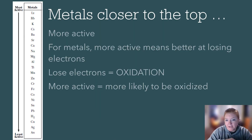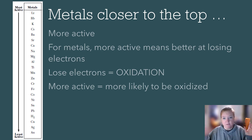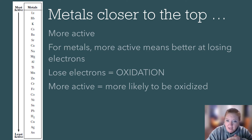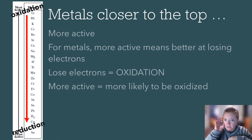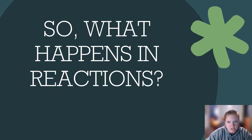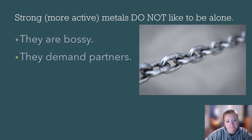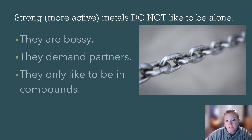Metals closer to the top are more active — there's an arrow that says 'most active' so you don't have to memorize it. For metals, being more active means being better at losing electrons. Looking at the periodic table, metals tend to lose electrons, which is oxidation. So for metals, more active means more likely to be oxidized. The top of the table represents oxidation and the bottom represents reduction. More active metals are bossy — they don't like to be alone and they demand partners; they only like to be in compounds.